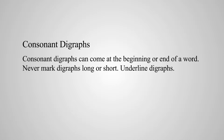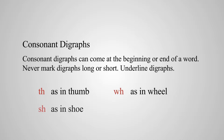These consonant digraphs are TH as in thumb, WH as in well, SH as in shoe, and CH as in church. You'll notice church has two digraphs — one at the beginning, one at the end — and the UR in the middle is an R-controlled vowel. Very interesting word.